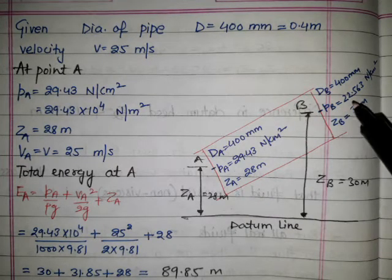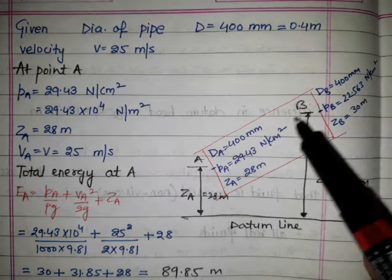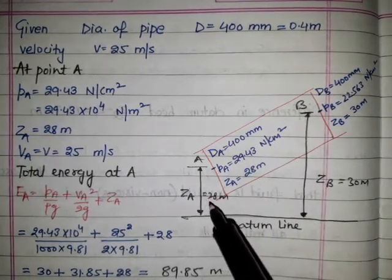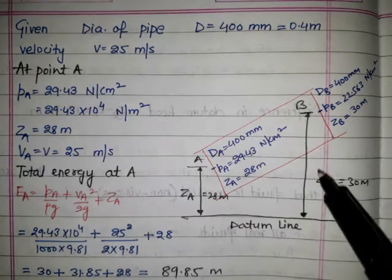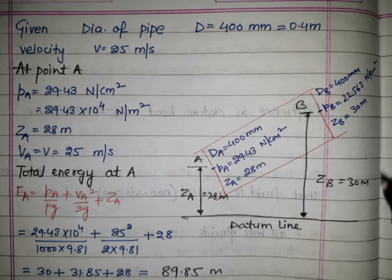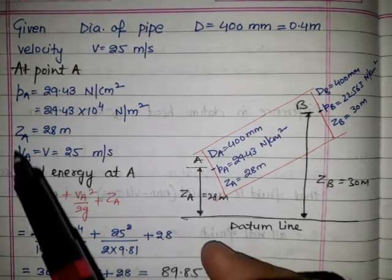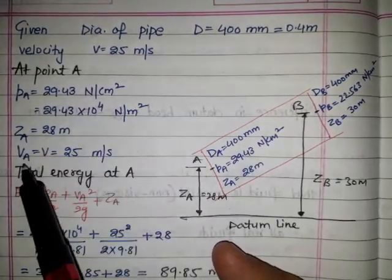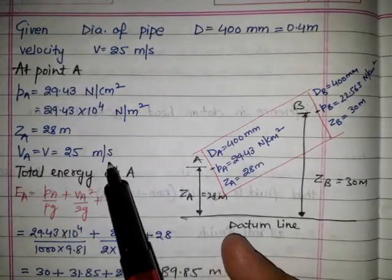But the pressure is varying - at B it's 22.563 and at A it's 29.43 Newton per centimeter square. Z_B, the datum height, is also varying at 30 meters from datum line. At point A, pressure, datum head, and velocity are given - 25 meters per second, that is V_A.